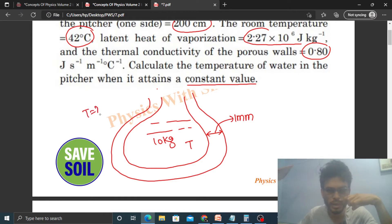T is the value you need to find out. The water inside this pitcher will be at a constant temperature T which we need to find. The outside temperature is 42 degree Celsius. The temperature of water in this pitcher will be less than 42 degree Celsius.